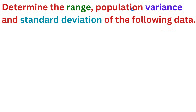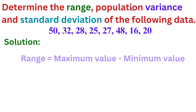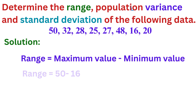Let us solve a model problem. Determine the range, population variance, and standard deviation of the following data: 50, 32, 28, 25, 27, 48, 16, 20. The range of the given data is found using the formula. Substituting maximum value 50 and minimum value 16, we get 34.